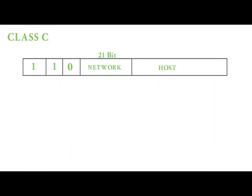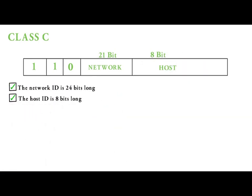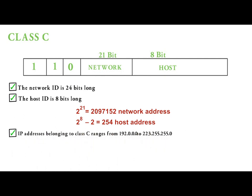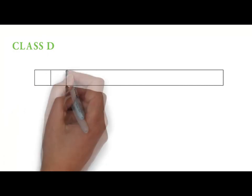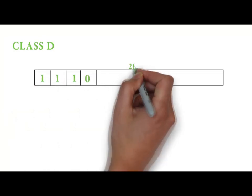In class C IP addresses, the network ID is 24 bits long and the host ID is 8 bits long. It has approximately 2 million network addresses and 254 host addresses. IP addresses belonging to class C range from 192.0.0.0 to 223.255.255.0.